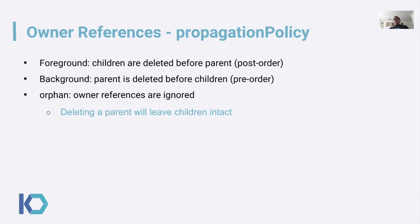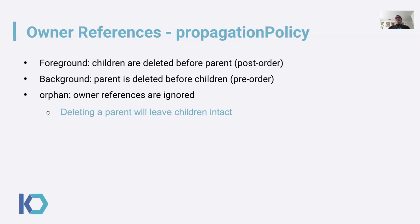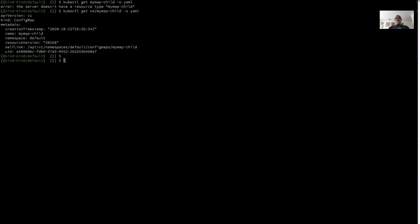Foreground means children are deleted before the parents. Background means parents are deleted first — parent is deleted before their children. You can also specify Orphan, which is just like specifying cascade equals false, meaning the owner references will be ignored and the parent will leave the children intact. The owner references on the children will be removed. Let me go over and demonstrate this.